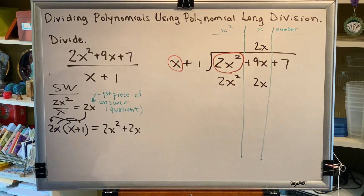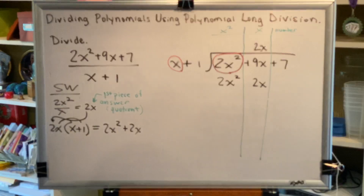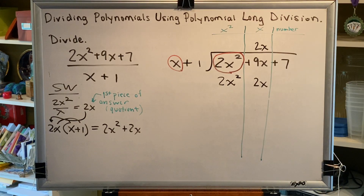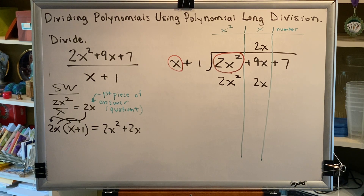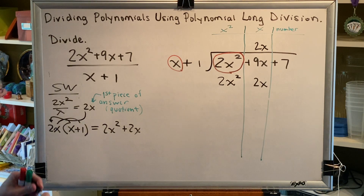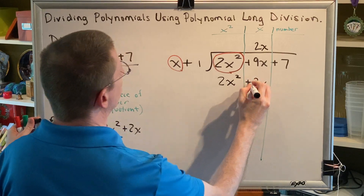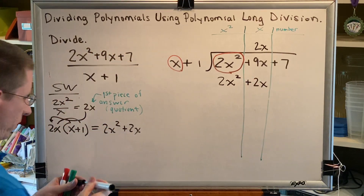Polynomial long division is a process that involves erasing. So whenever you do polynomial long division, you want to make sure that you are writing with a pencil or erasable pen. If you don't have either one of those, pause this video and go get them right now because you're going to need them in a moment. So we've got 2x squared plus 2x.